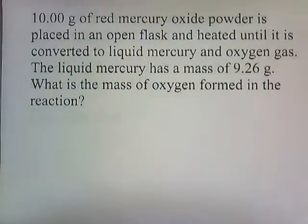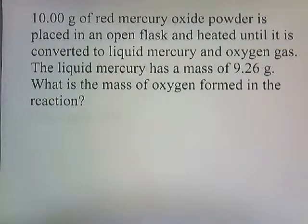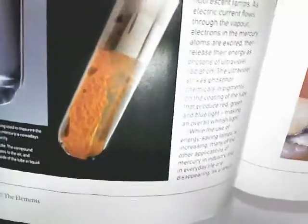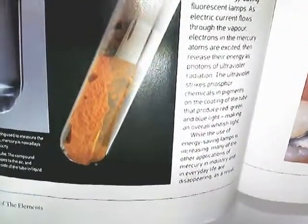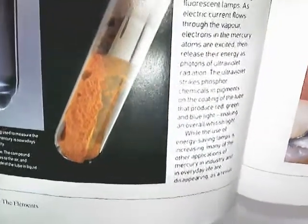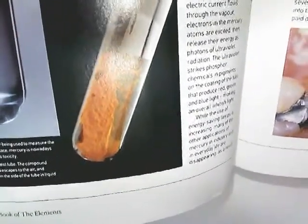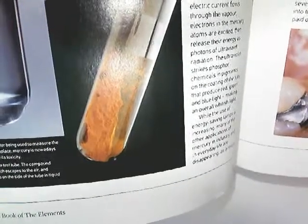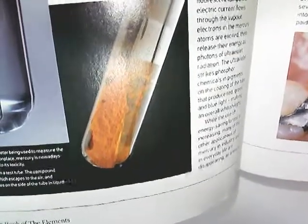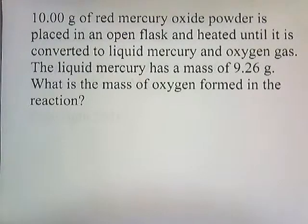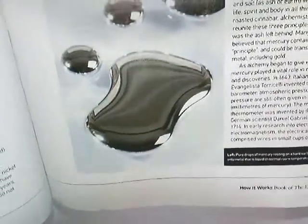Let's try a problem. 10 grams of red mercury oxide powder is placed in an open flask and heated until it is converted to liquid mercury and oxygen gas. The liquid mercury has a mass of 9.26 grams. What is the mass of oxygen formed in the reaction? So red mercury oxide powder is heated — mercury oxide has a red appearance — and in the picture it's in a test tube being heated. If you heat mercury oxide, this red powder, it turns into liquid mercury and also gives off oxygen gas.